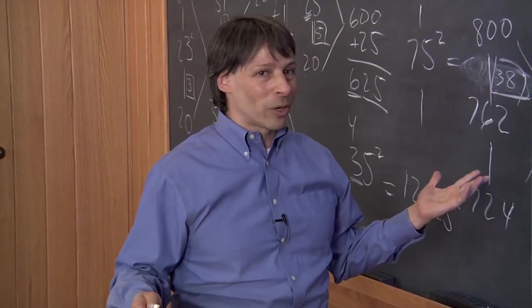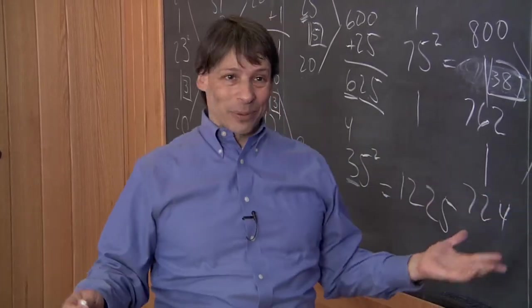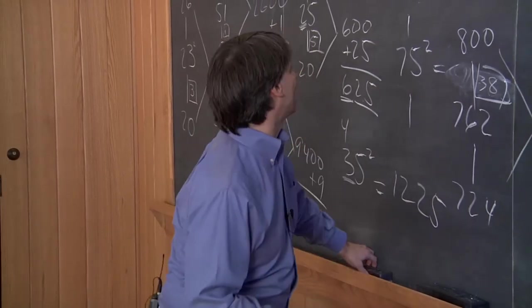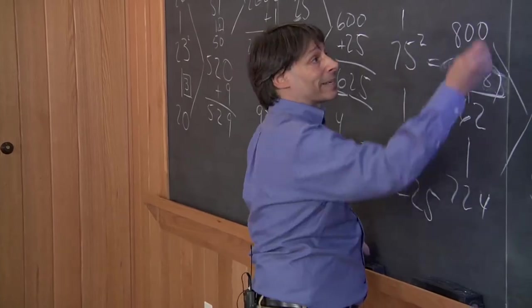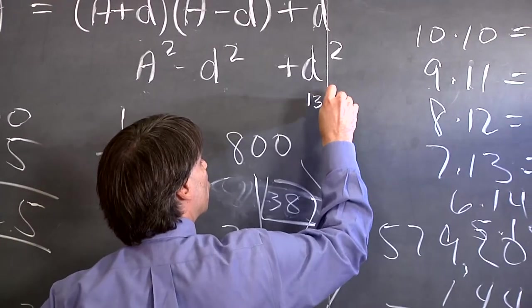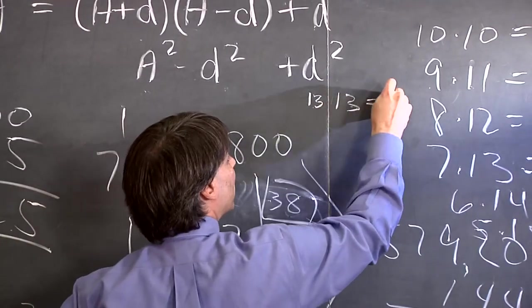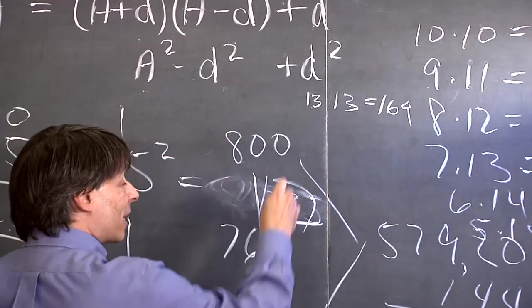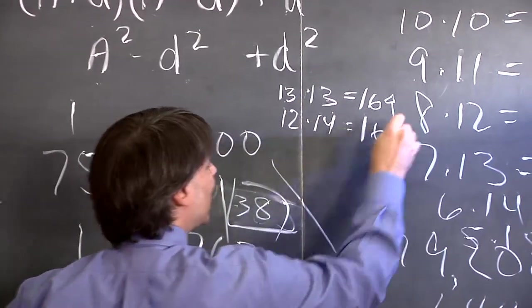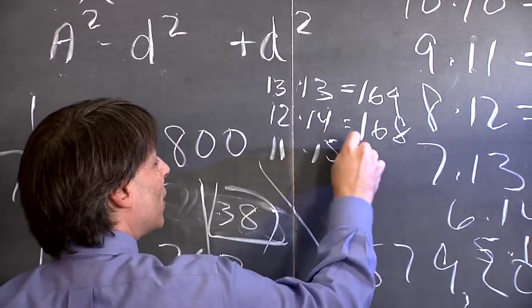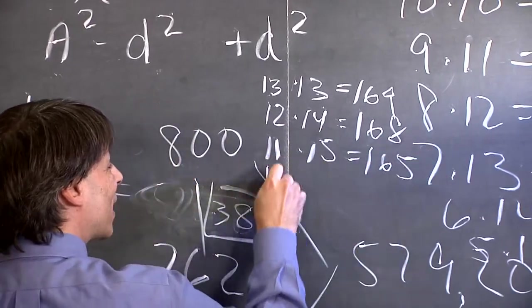Well how do you tell if something always works? You try another example, see if it works there. So I tried another example. Let's say I looked at the numbers that added up to 26, like 13 and 13. They multiplied to 169. Then I did 12 times 14, they multiplied to 168. 11 times 15 multiplied to 165. 10 times 16 is 160.